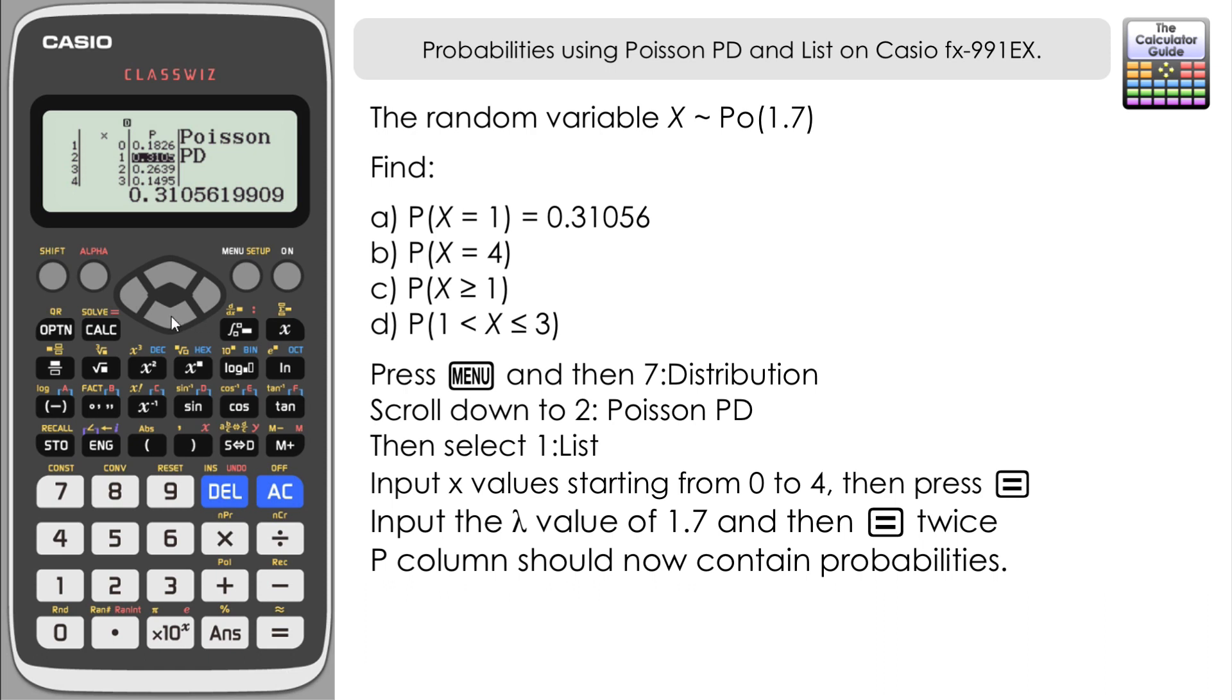For part b, very similar, we just need to navigate down to X equals 4. Here we've got the probability for X equals 4: 0.06357 to five decimal places. So parts a and b very easy, just reading off from the table.